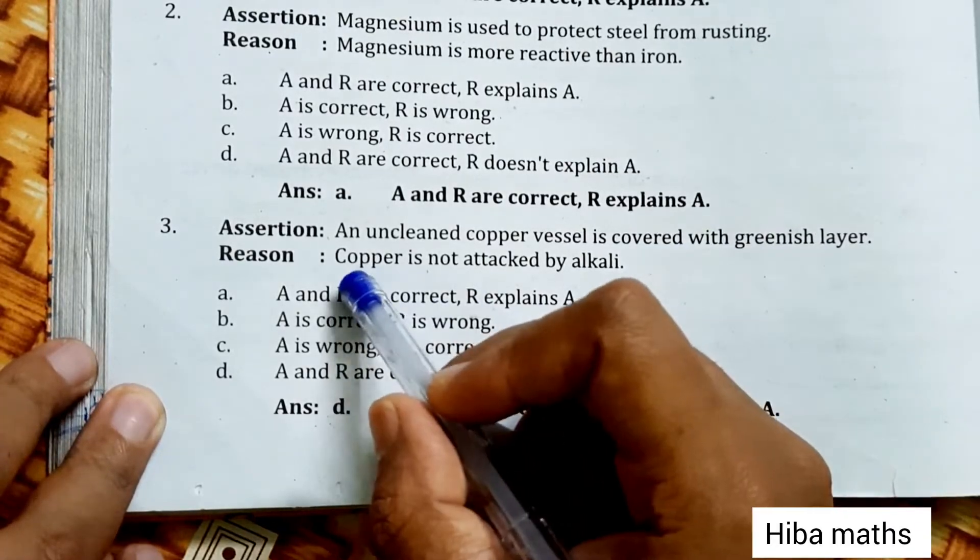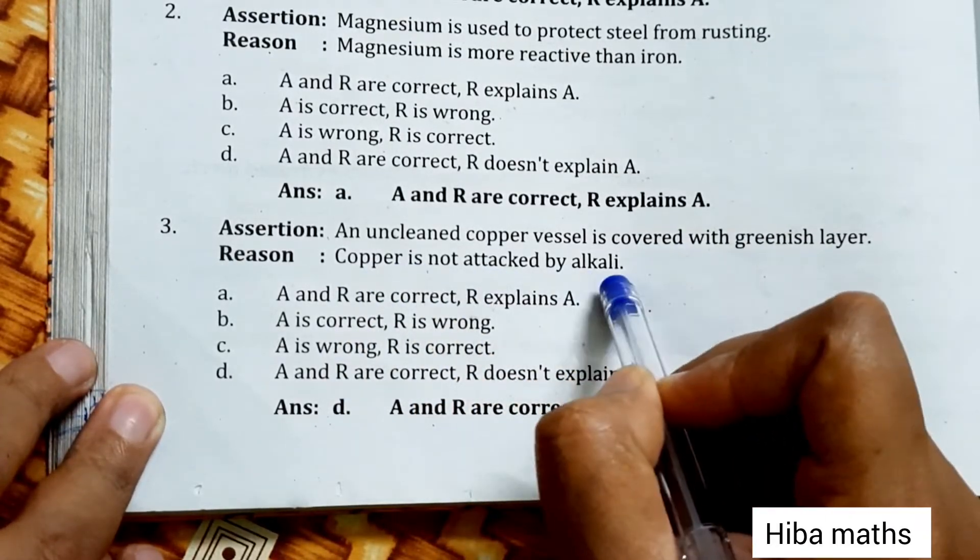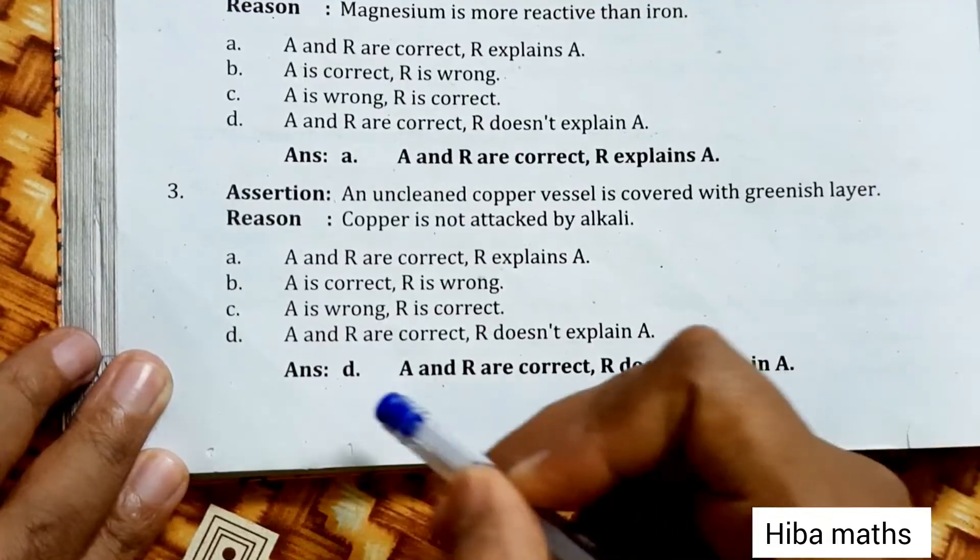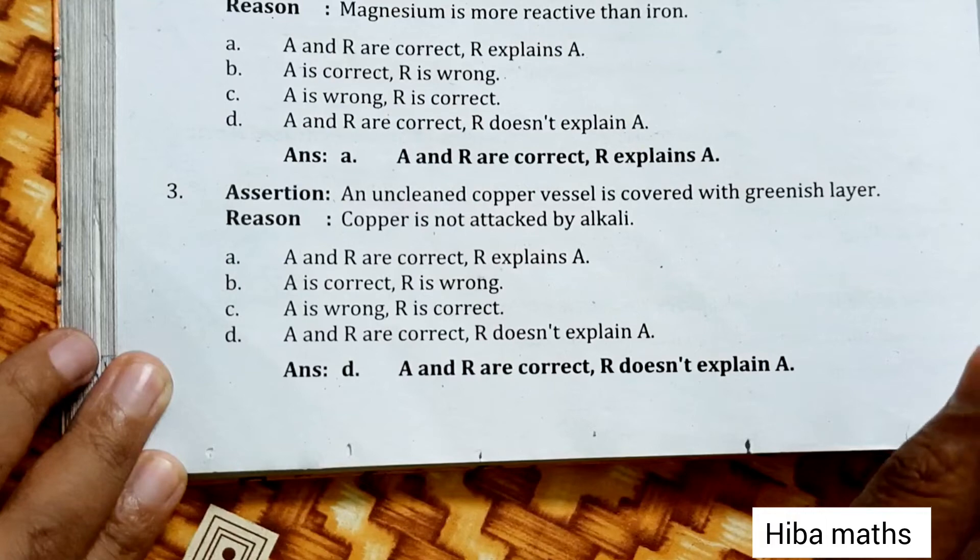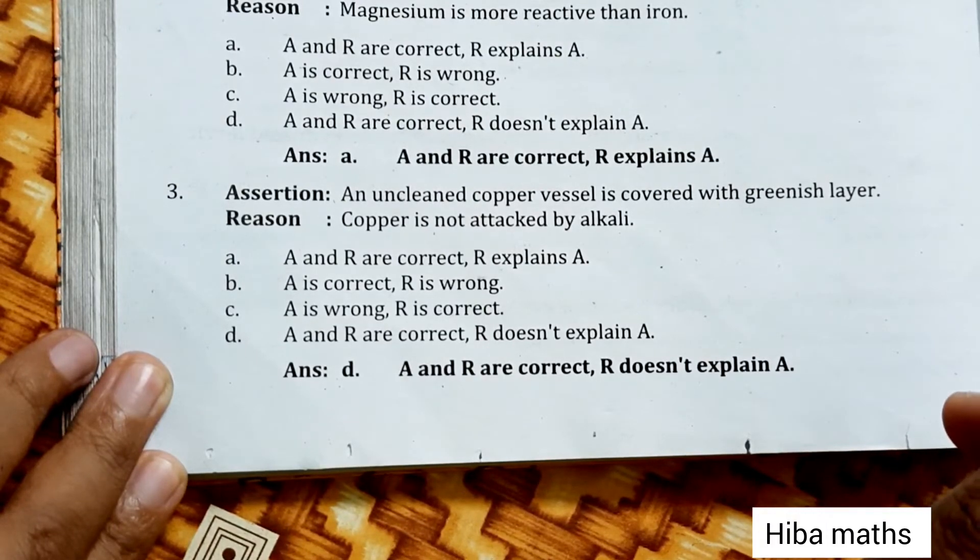An uncleaned copper vessel is covered with greenish layer. Copper is not attacked by alkali. A and R are correct, and R does not explain A. Thank you so much for watching.